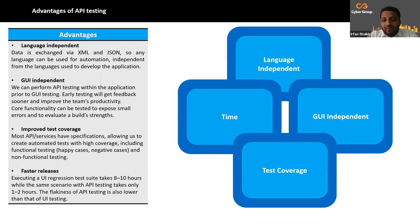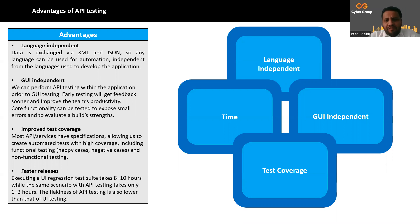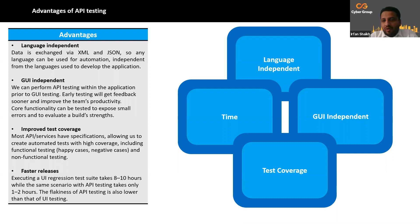Faster release time: organizations have been moving to agile, wanting to finish sprints successfully, and everything comes down to time. UI-based testing can take typically eight to ten hours, whether manual or automated. But API testing can finish in one to two hours. That advantage is another major plus for API testing.